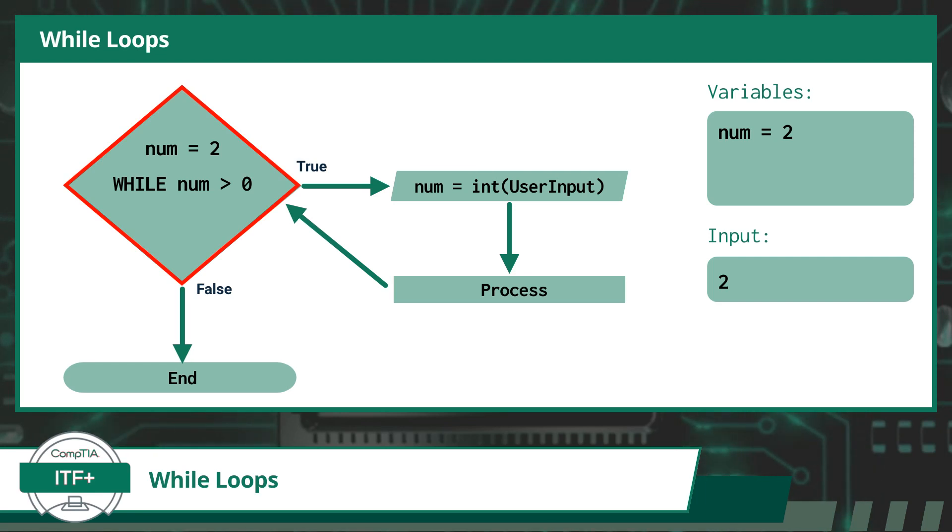Now it is time to re-evaluate and see if the condition statement of the while loop is still true. Here we can see that the variable num, which is now equal to 2, is indeed still greater than 0, so we will execute the code within the while loop a second time.